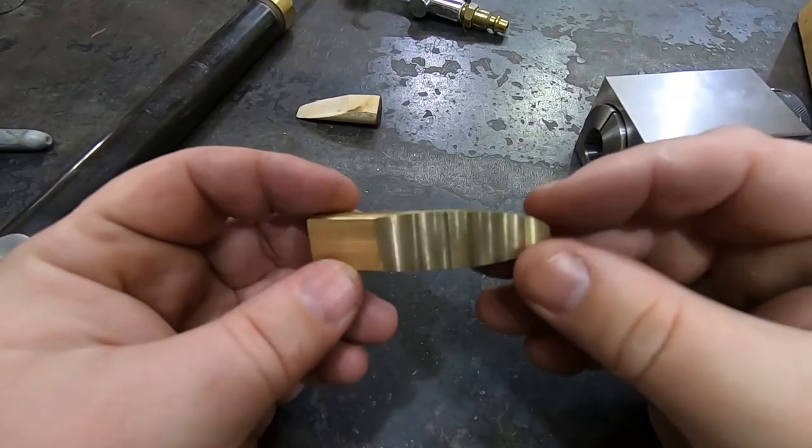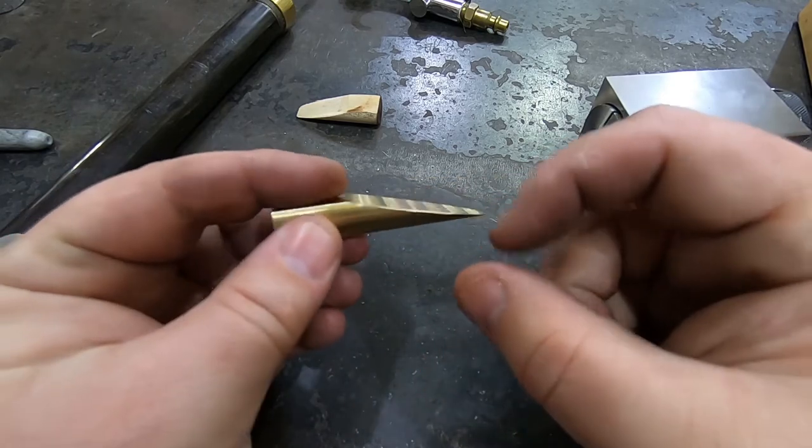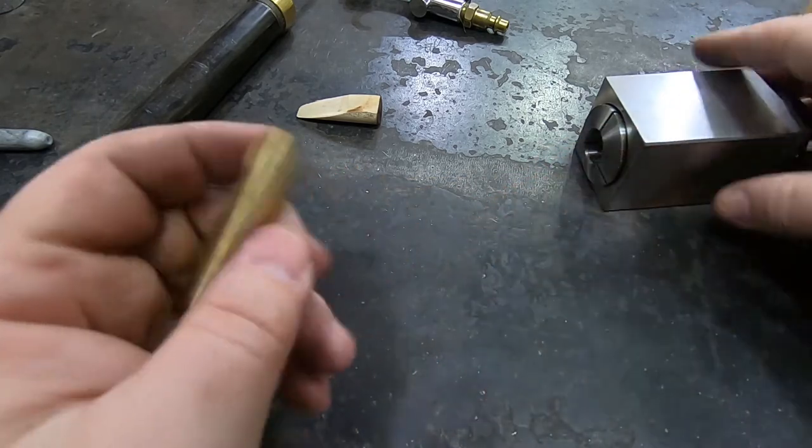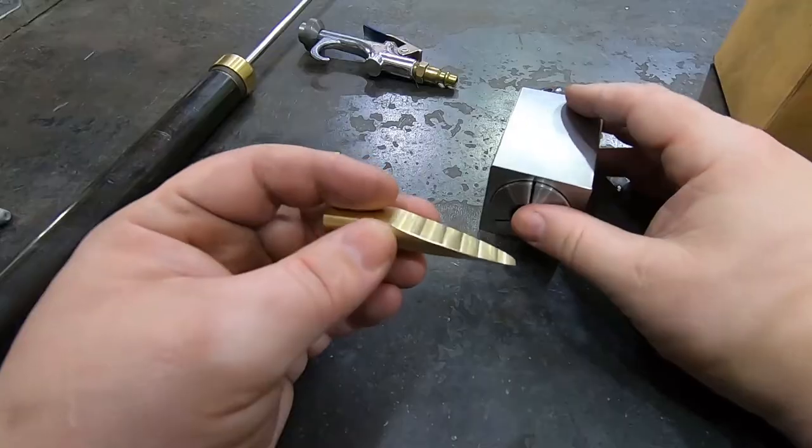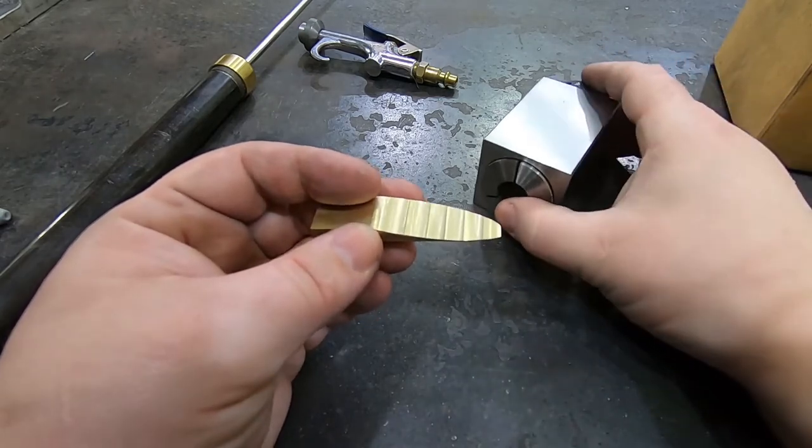There it is. Pretty good, I think. It didn't have any significant chatter problems, even though it was stuck out so far and so thin, so that's good. And you know, collet blocks are pretty awesome. If you don't have them, I recommend getting a set. They're not quite as much fun as using the indexing head, but they sure are convenient for some stuff like this.